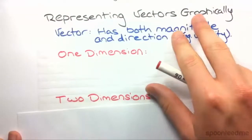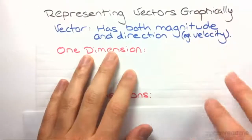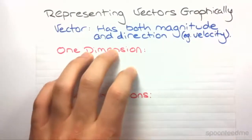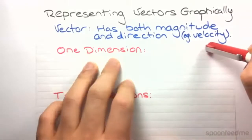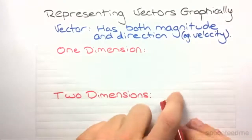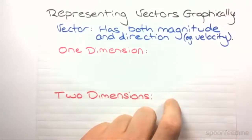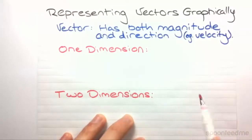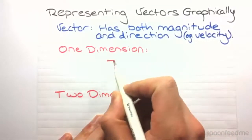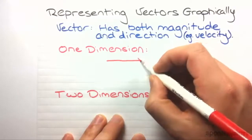So how do we represent vectors graphically? Well, if you recall from previous videos, a vector is a quantity that has both magnitude and direction, such as velocity. In one dimension the vectors only go forwards or backwards. The way we represent a vector is we represent its magnitude by the length of a line, and the direction by that arrow.